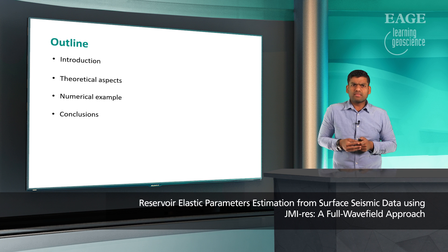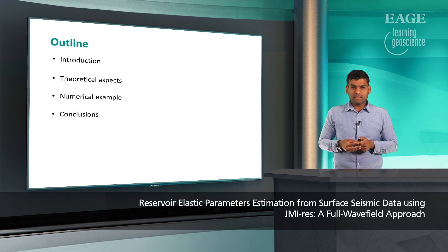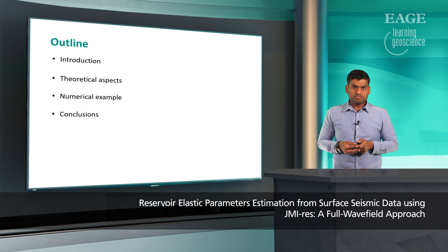This will be the outline of my presentation. I start with the introduction and motivation behind this work, then give a brief overview of JMI-RIS and the different steps associated with it. I will use a numerical example to explain JMI-RIS and the importance of explaining internal multiples present in the data, and finally end with conclusions.